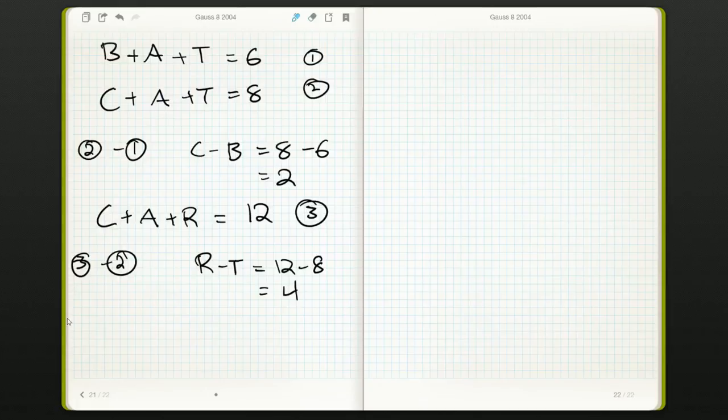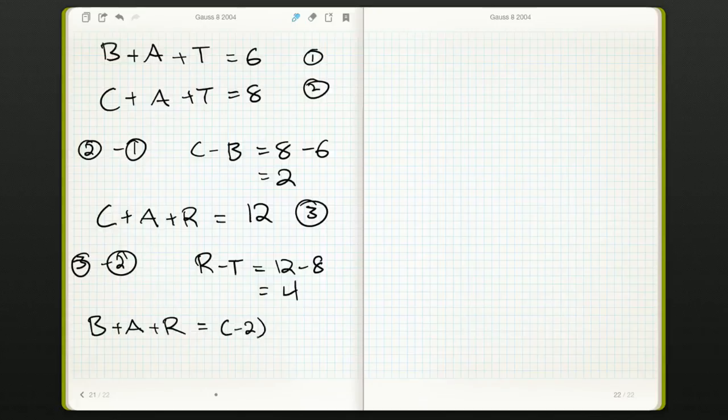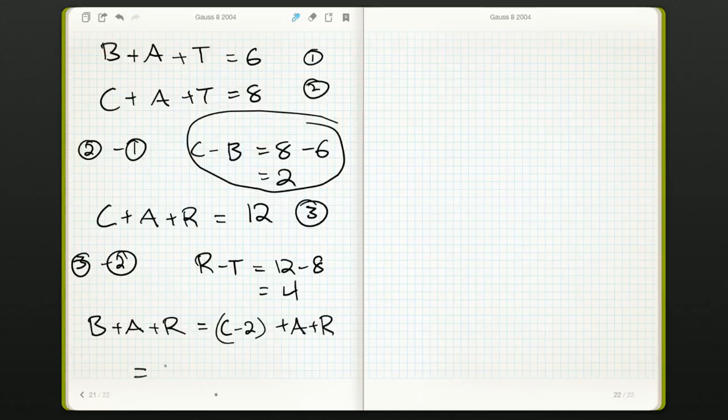And now we're asked to compute the value of bar. Well, actually, oh, we didn't even need to use the information from car. Well, we do need to use the information from car. But this is going to be the same. B is the same as C minus 2. We just rearrange this equation up here. And so, then this is car, minus 2, and that's 12 minus 2, and that's 10.